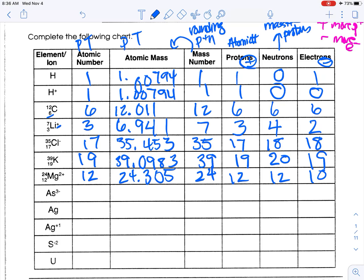Next is arsenic, As. Looking for it on the periodic table — it's number 33. The atomic mass is 74.9216. Round it to 75. Protons is 33. 75 minus 33 is 42 neutrons. Notice we have a negative 3 charge, which means 3 more electrons than normal. So if I have 33 protons, that's 36 electrons.